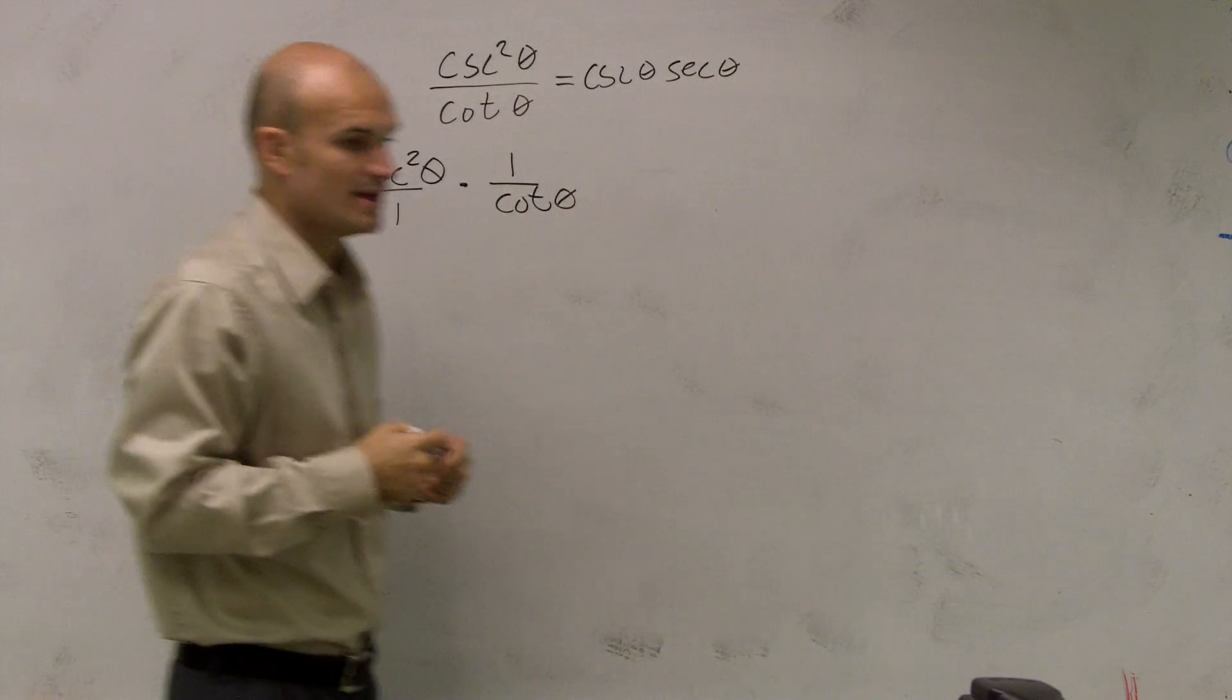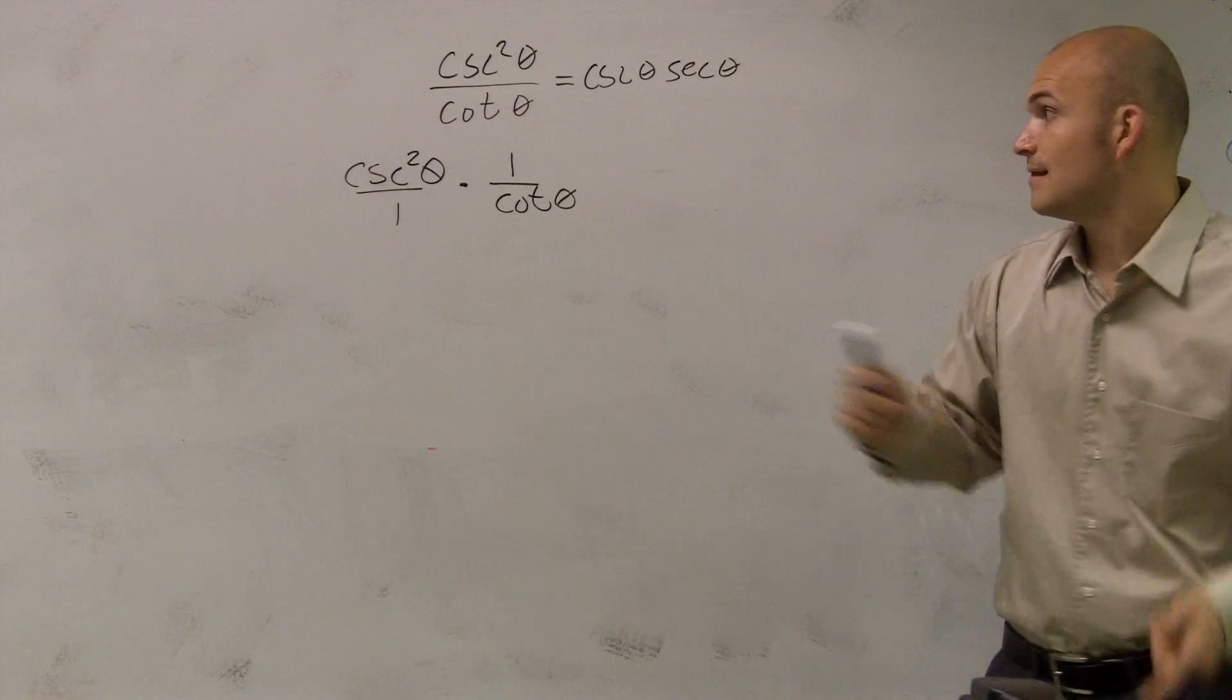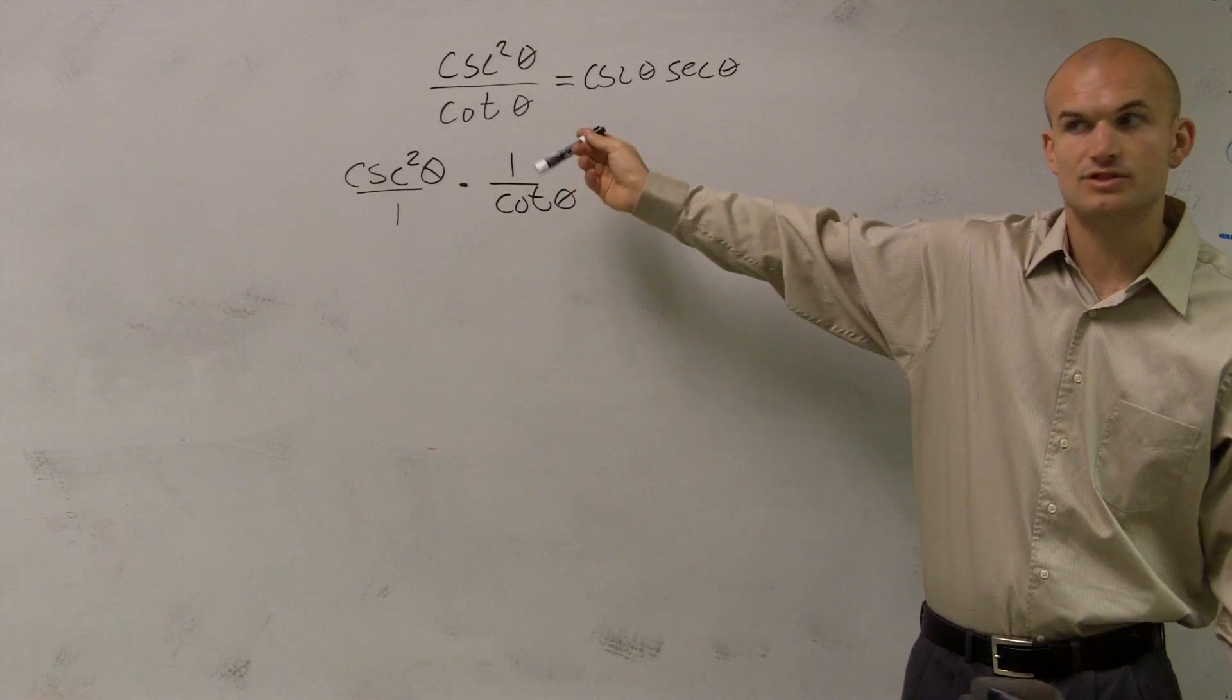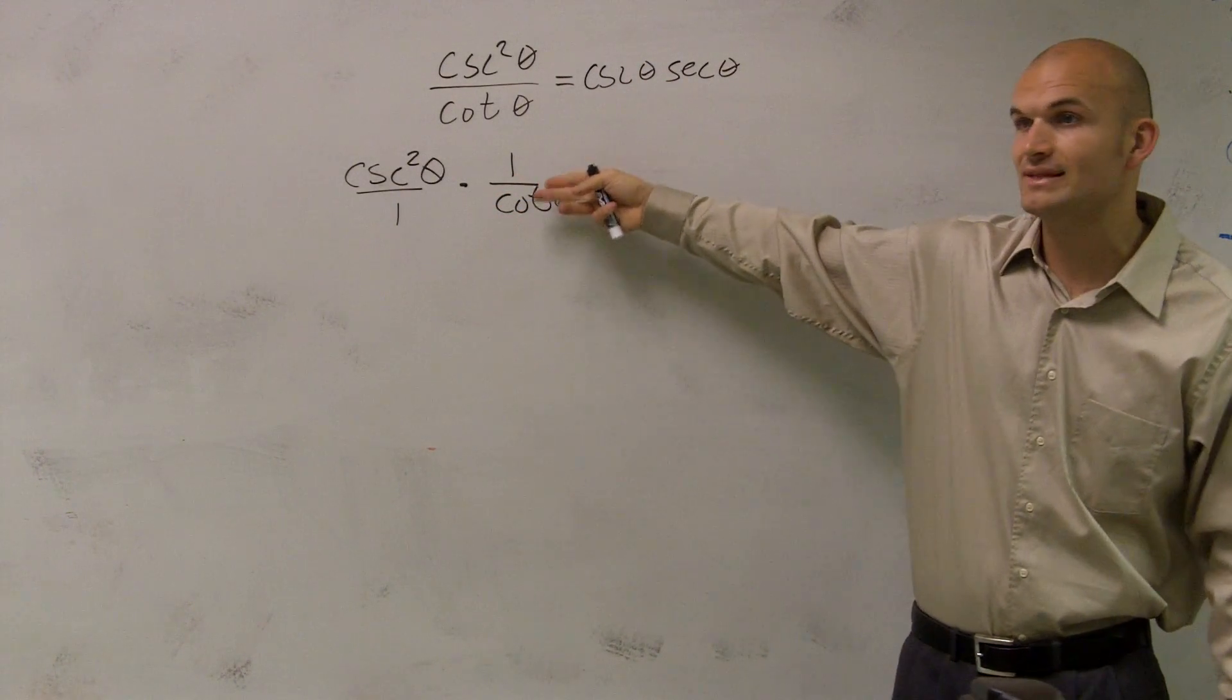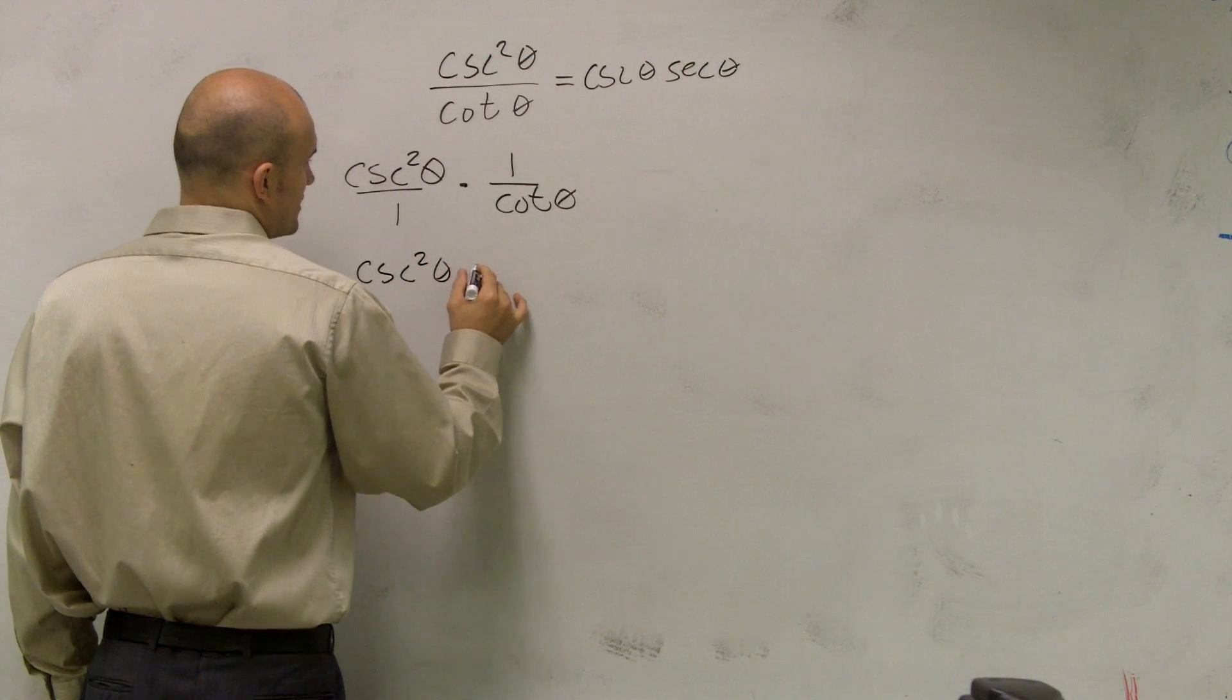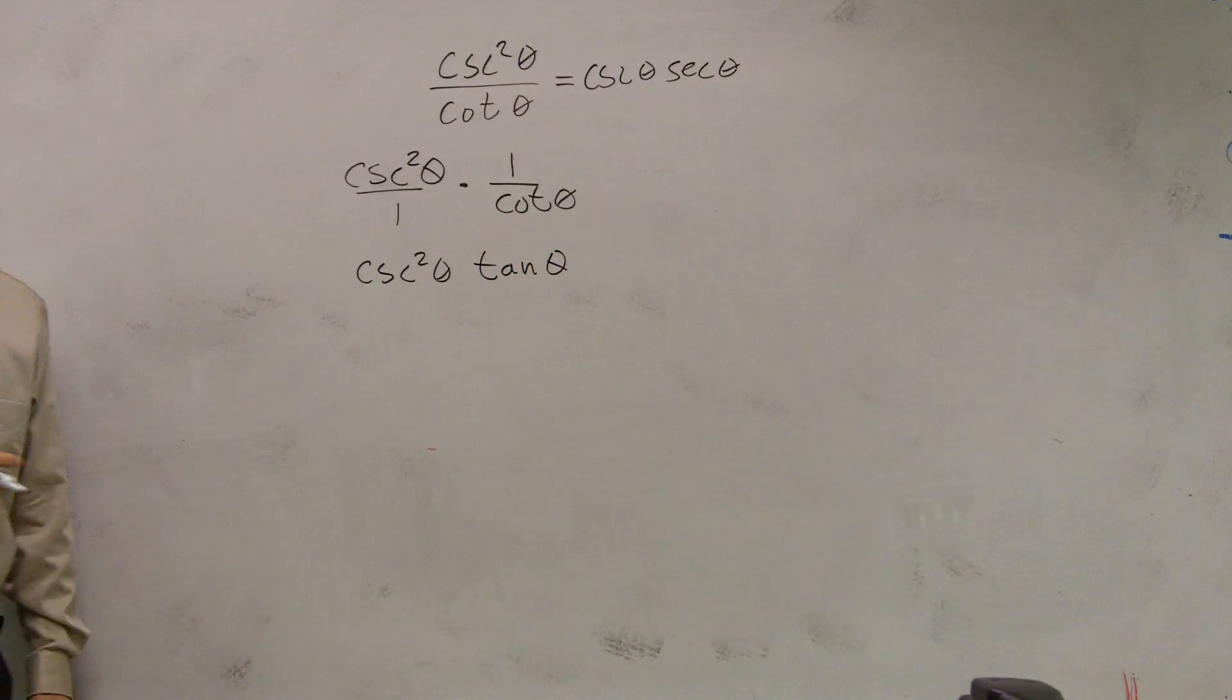But the reason why I separated them is because, remember, we have reciprocal identities. What is 1 over cotangent? What is that 1 over cotangent? Tangent. It's as simple as tangent. So therefore, what I did is I could pretty much rewrite these without having my fractions. So I can rewrite this as cosecant squared of theta times tangent of theta.